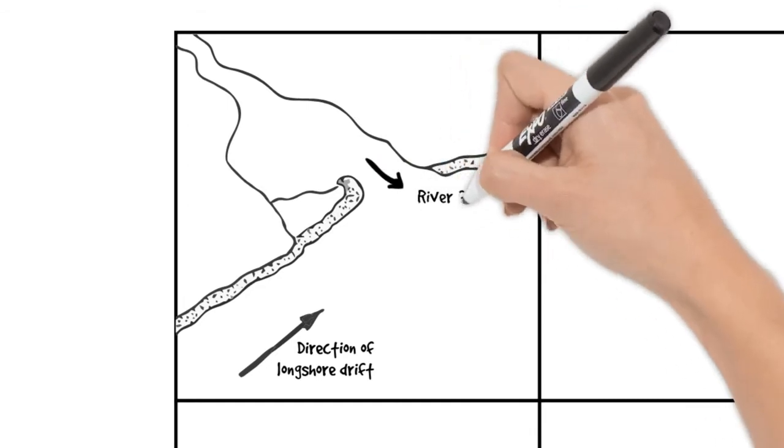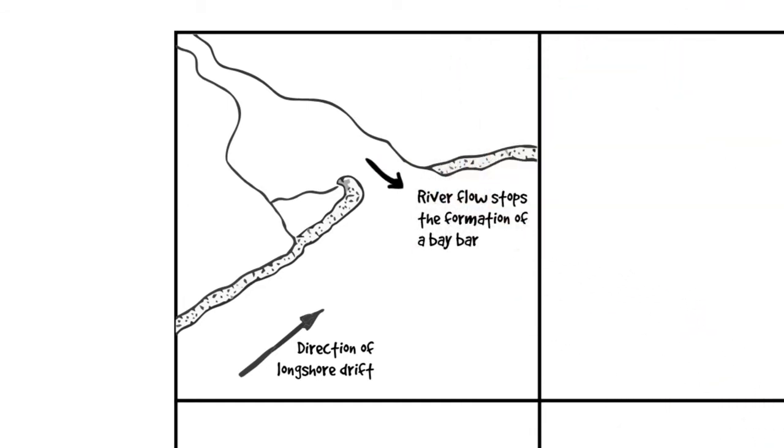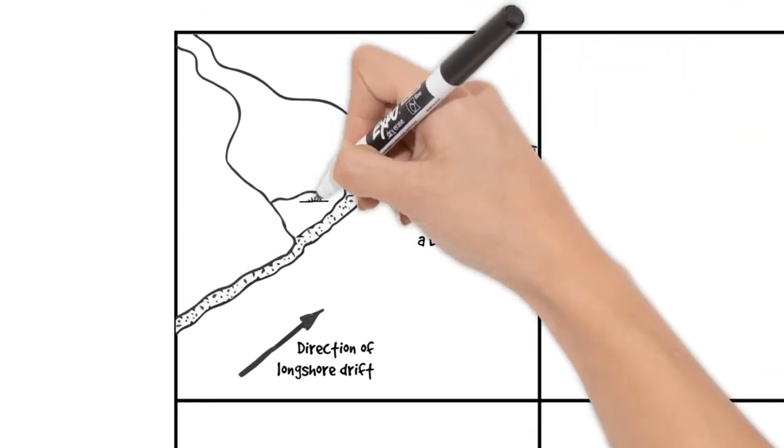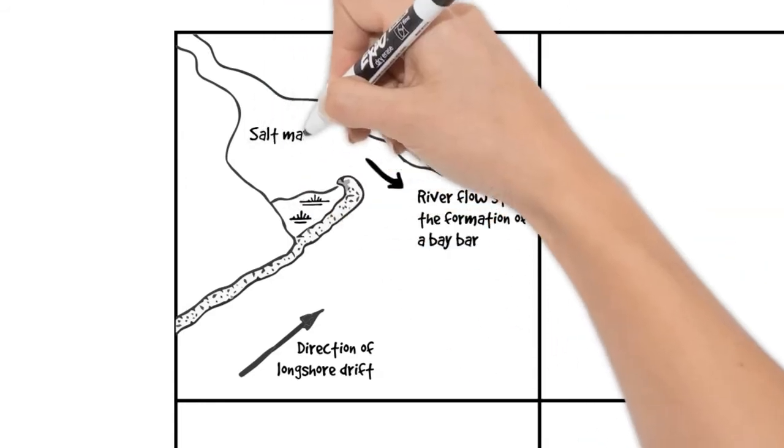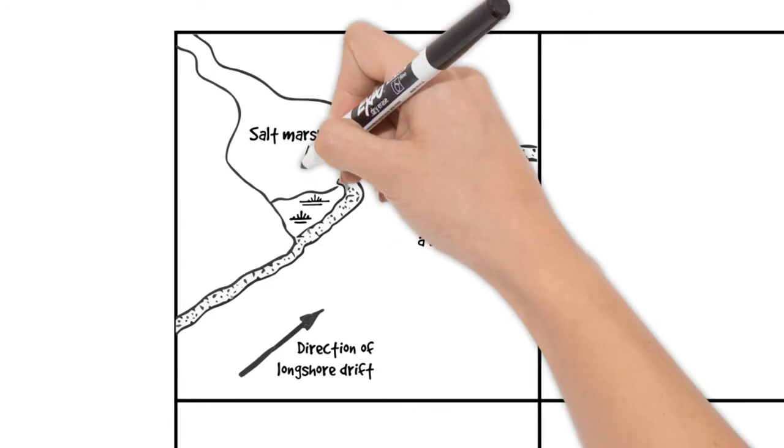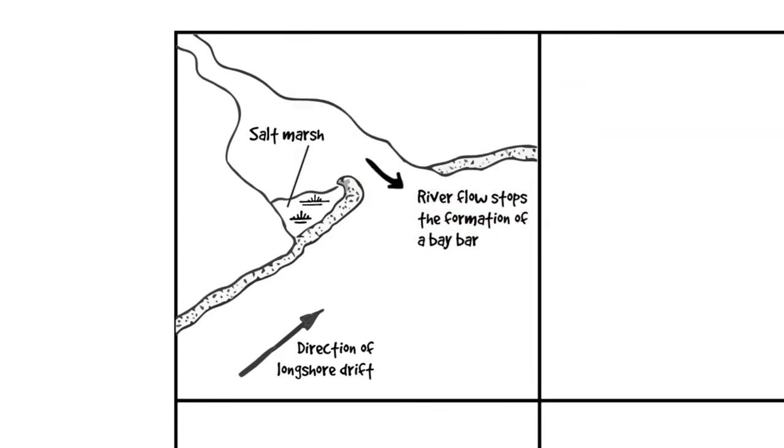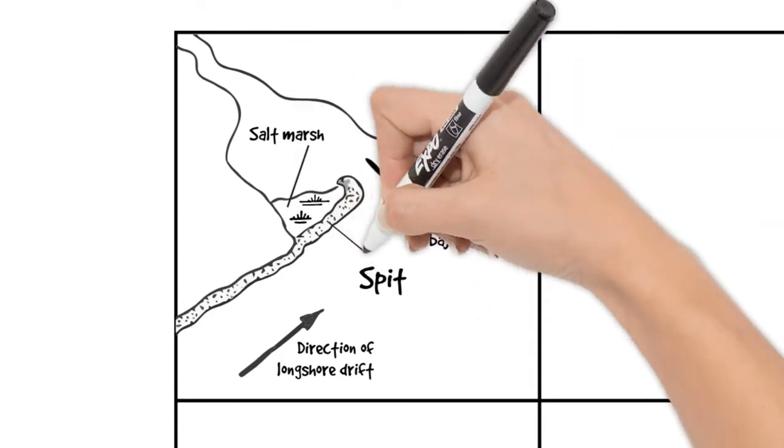So we can see the direction of longshore drift in our label. I'm going to show here the river flow that stops the formation of a Bay bar, because if it went right across the river mouth. I'll mark the salt marsh behind there, and obviously it's a spit, so we're going to label the spit as well.